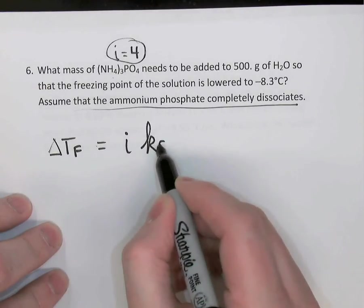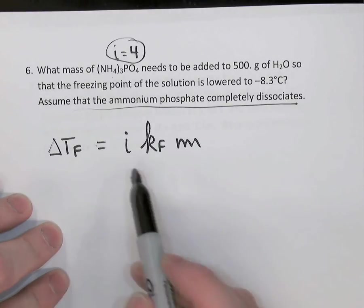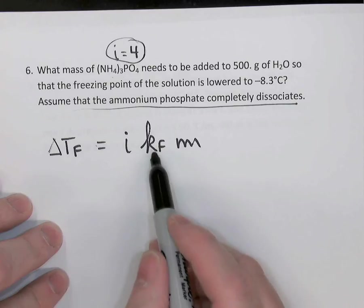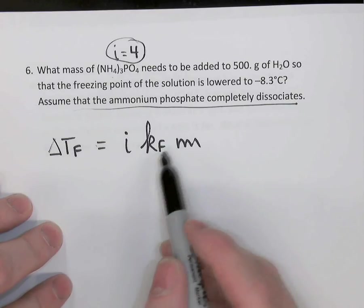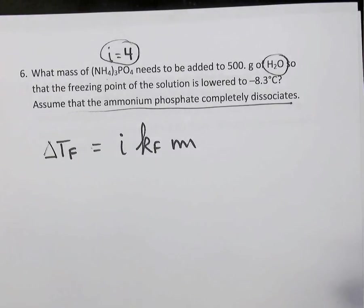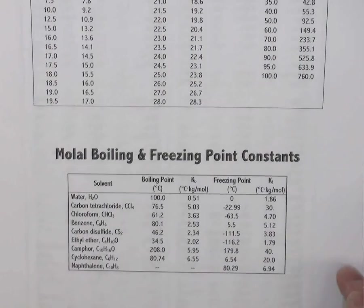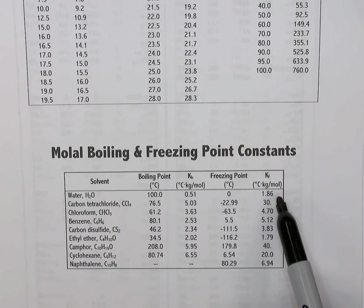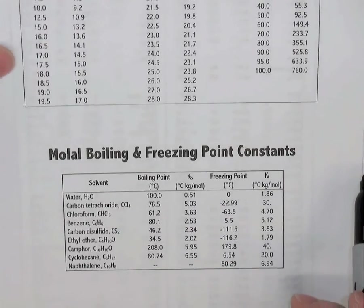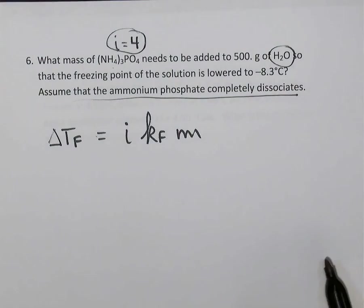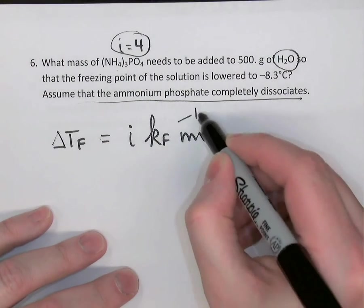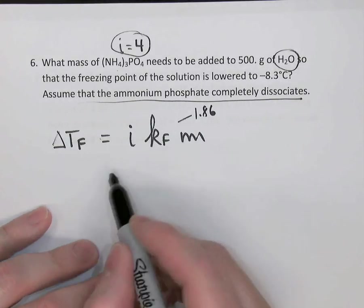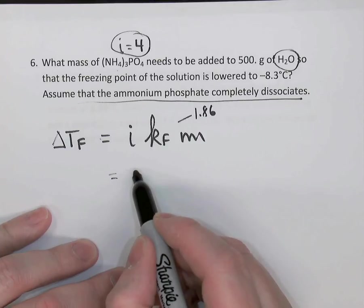Delta Tf equals i KF times molality. i is the Van't Hoff factor, which we know. KF is the freezing point constant, and it refers to the solvent, in this case for water. We would look that constant up. We have a data booklet that has a table of these constants in it. So here's our table of freezing point constants for water. We're reminded that it freezes normally at zero degrees Celsius, and it has this freezing point constant of 1.86 degrees Celsius per molal. So 1.86 is the value for KF. Now molality, we remember, is moles of solute per kilogram of solvent.